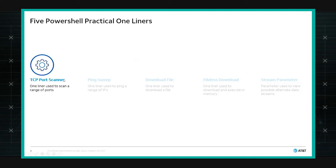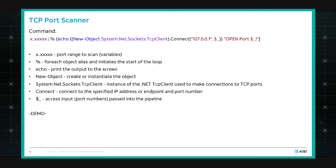What we're going to begin with is the TCP port scanner — a one-liner used to scan a range of ports. Going from left to right: on the left-hand side is your port range to scan. You could put in 1 to 50, 1 to 1,000, or go to the max 65,535, whatever range you want. The next part is the pipe command, which takes the output from the left-hand side and pipes it into the next set of commands. In PowerShell, the percent sign represents a for-each-object alias, and it initiates the start of the loop.